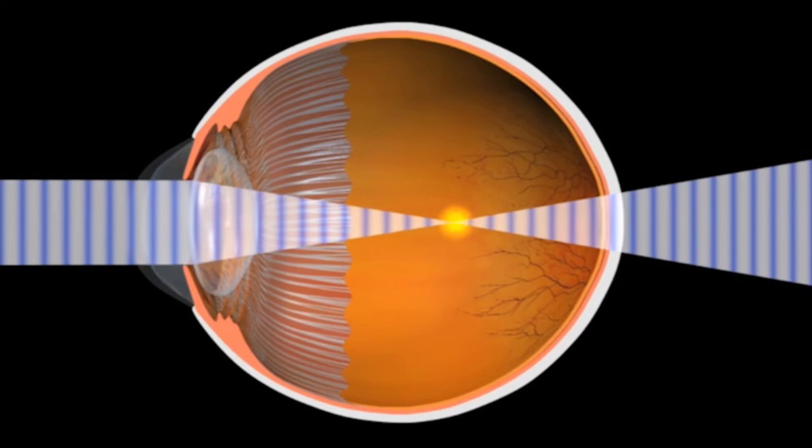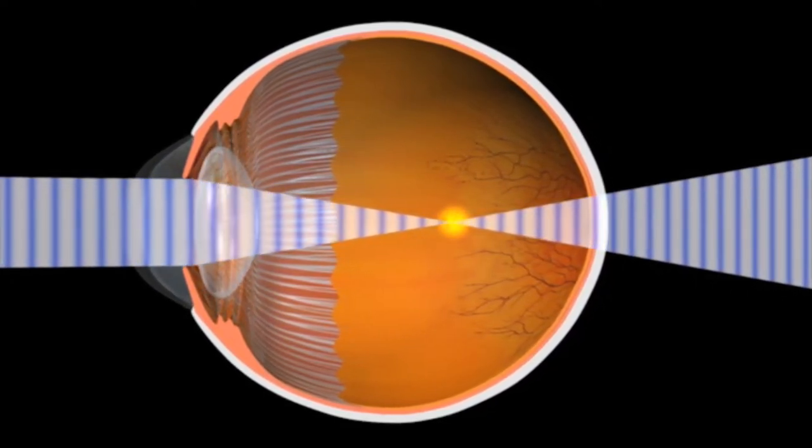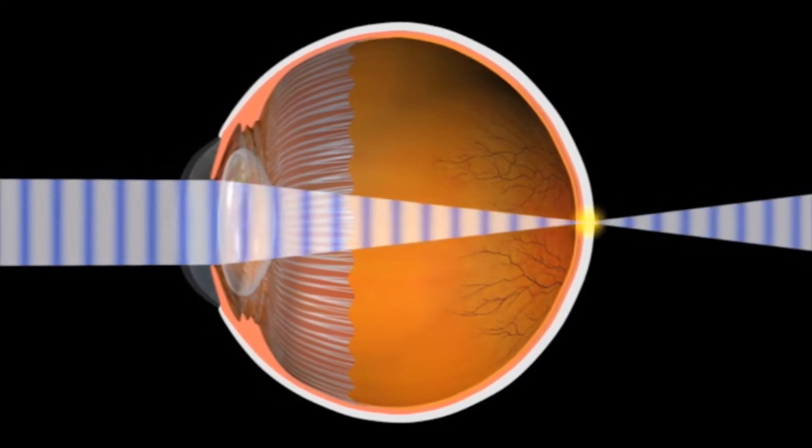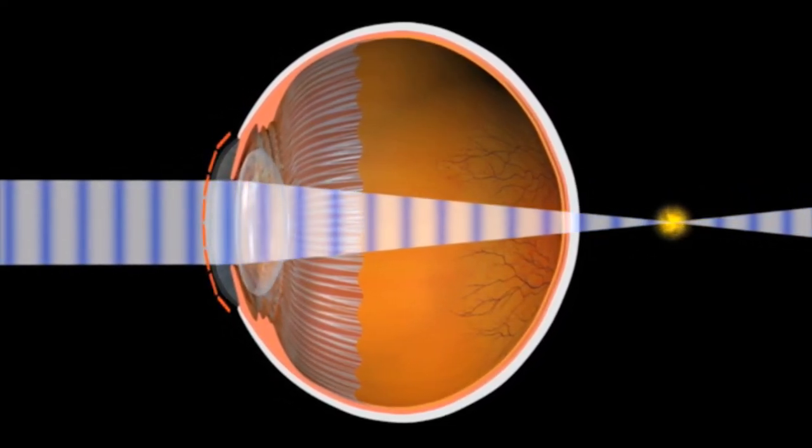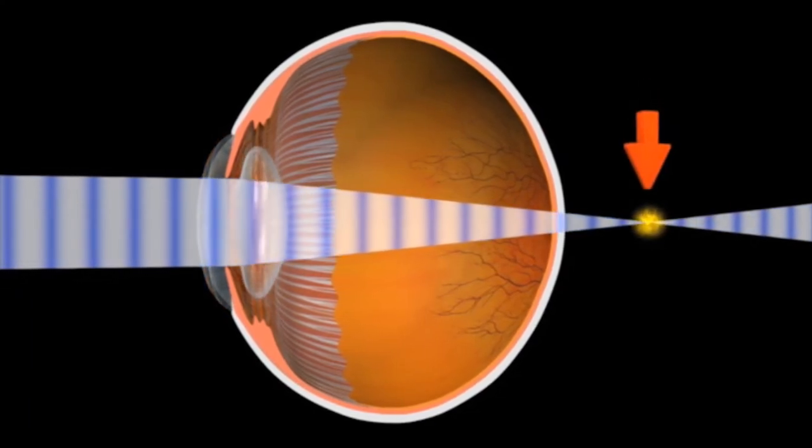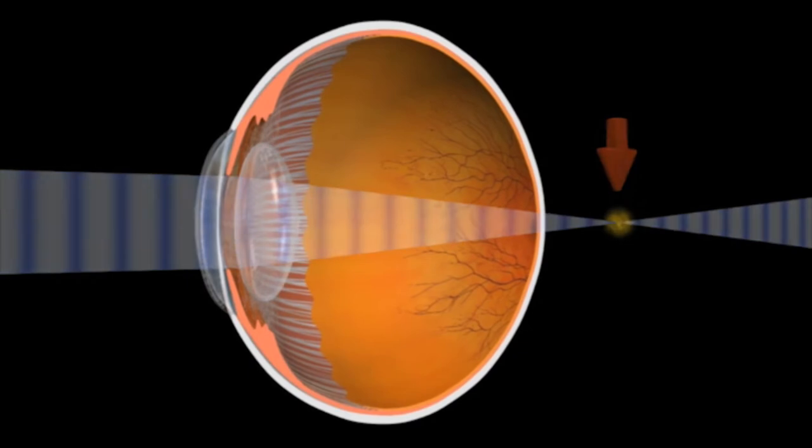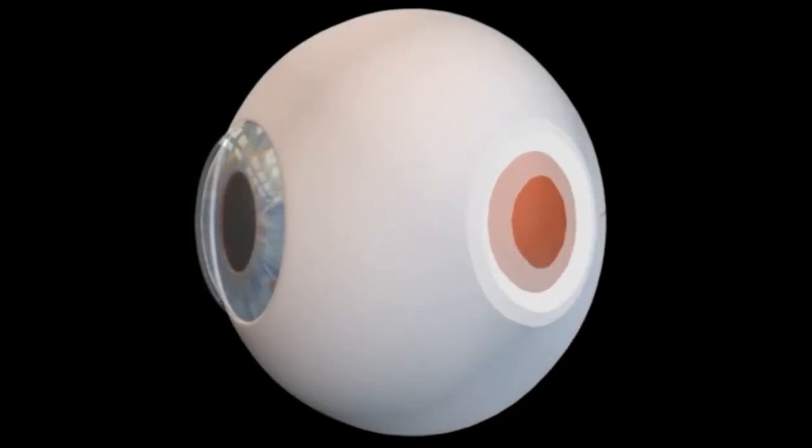Hyperopia, or farsightedness, is the opposite of myopia. It occurs when the eyeball is slightly shorter than normal or the shape of the cornea is too flat. This causes the light entering the eye to come to a focus behind the retina, which results in blurred near vision. Distance vision may also be blurred depending on the severity of hyperopia.